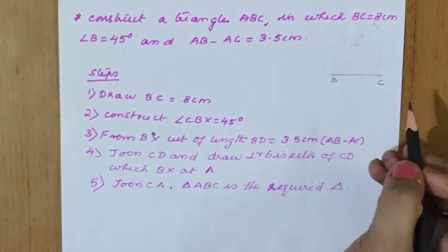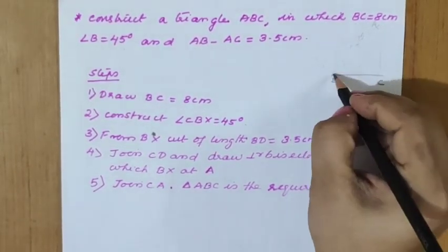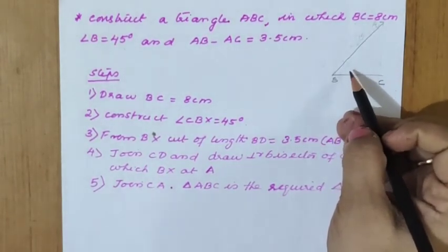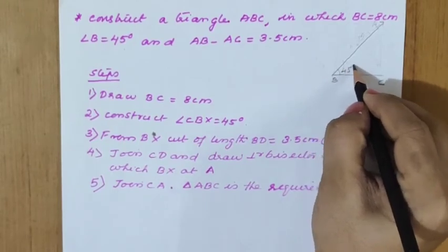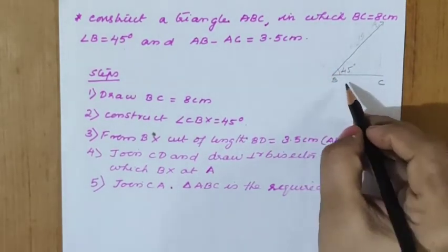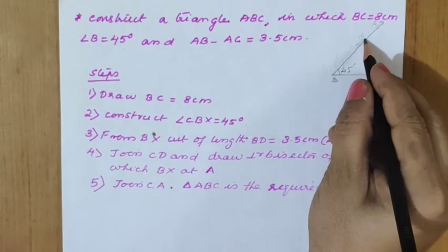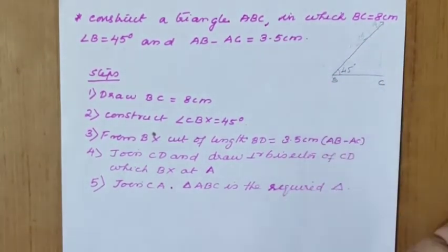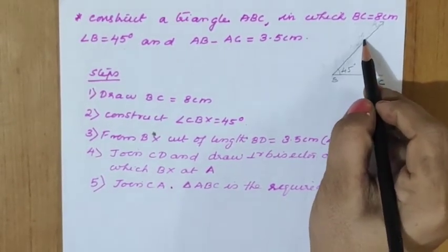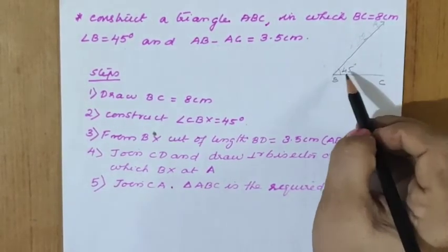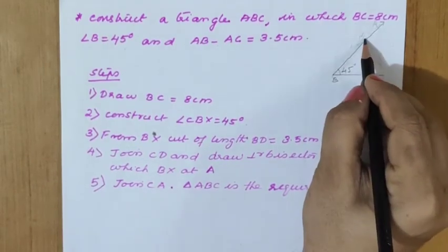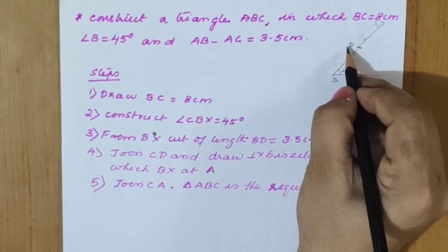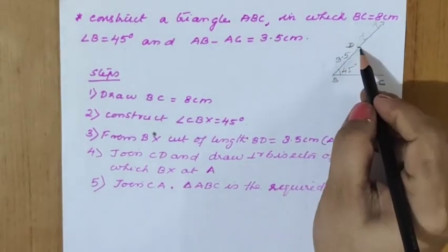For the rough diagram, BC equals 8 centimeter, angle B equals 45 degree. For getting 45 degree, 90 degree has to be done first, then the angle bisector to be drawn — then only 45 degree is obtained. Now, AB minus AC equals 3.5. AB is the longer side, so the longer line is coming on the same side. So approximately marking D here, BD should be equal to 3.5.